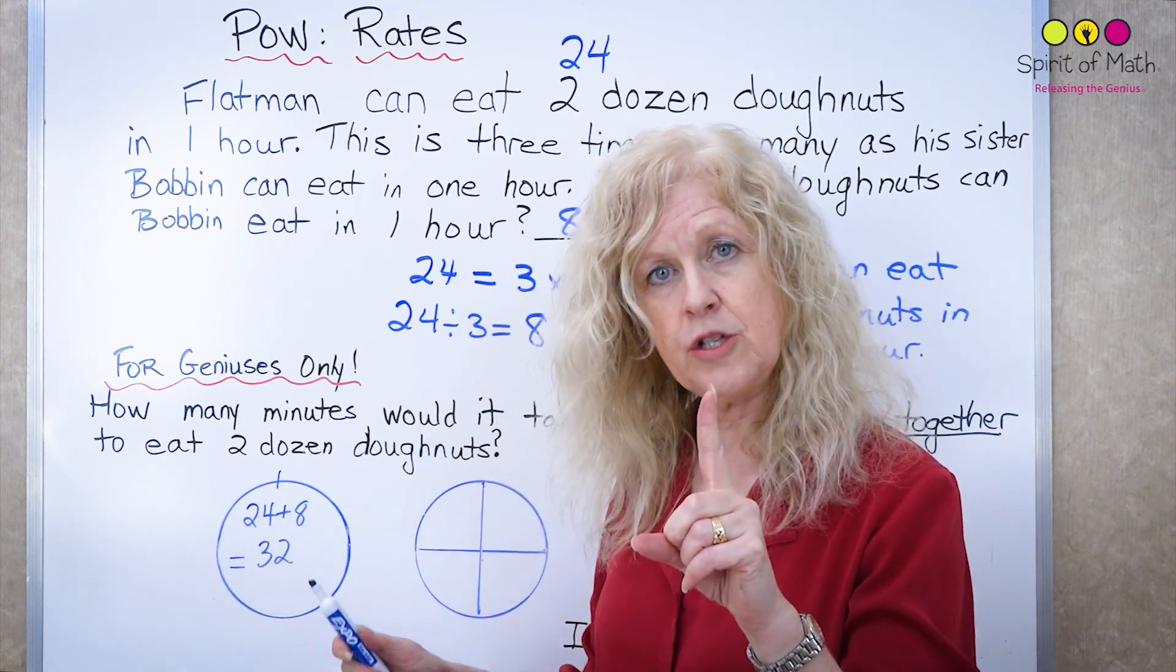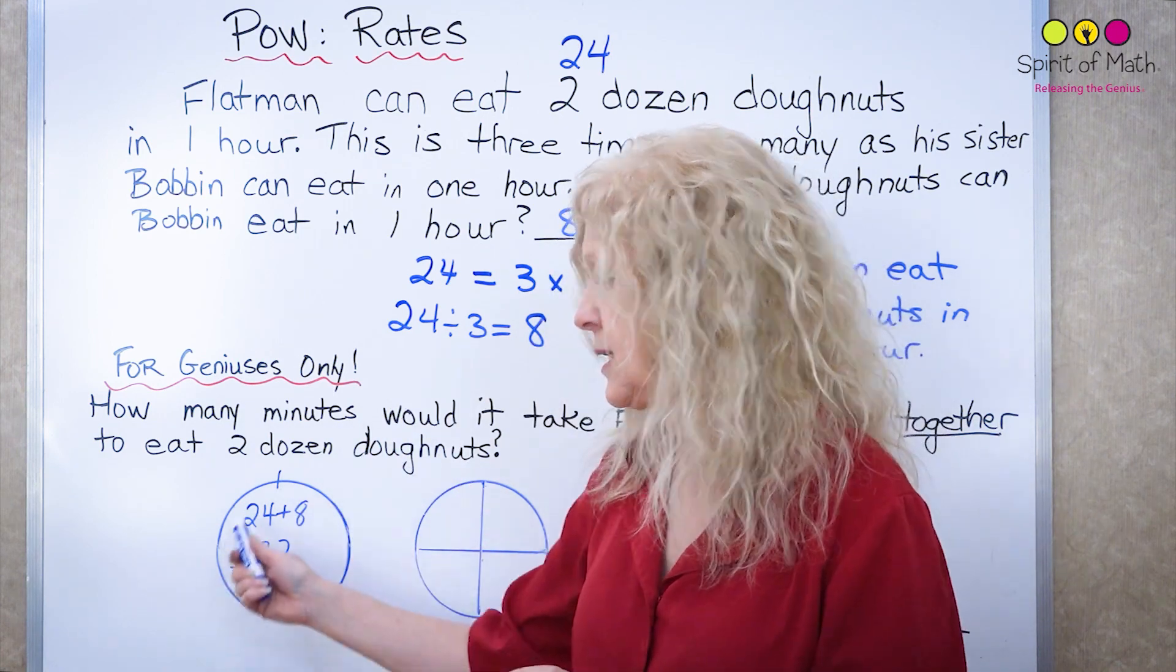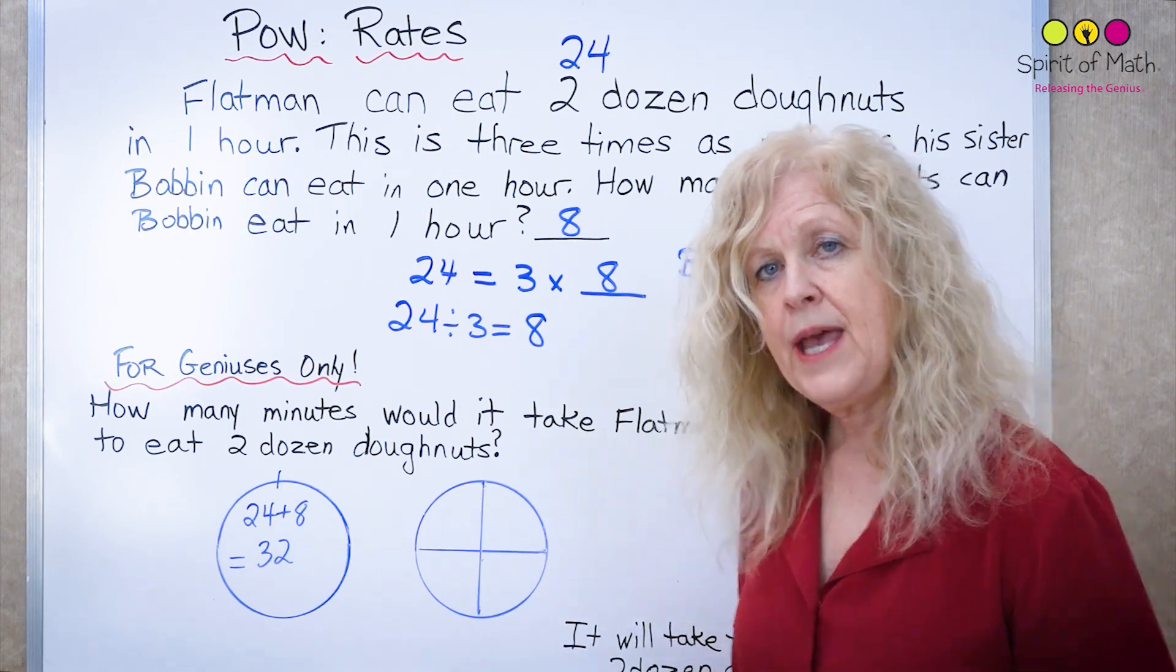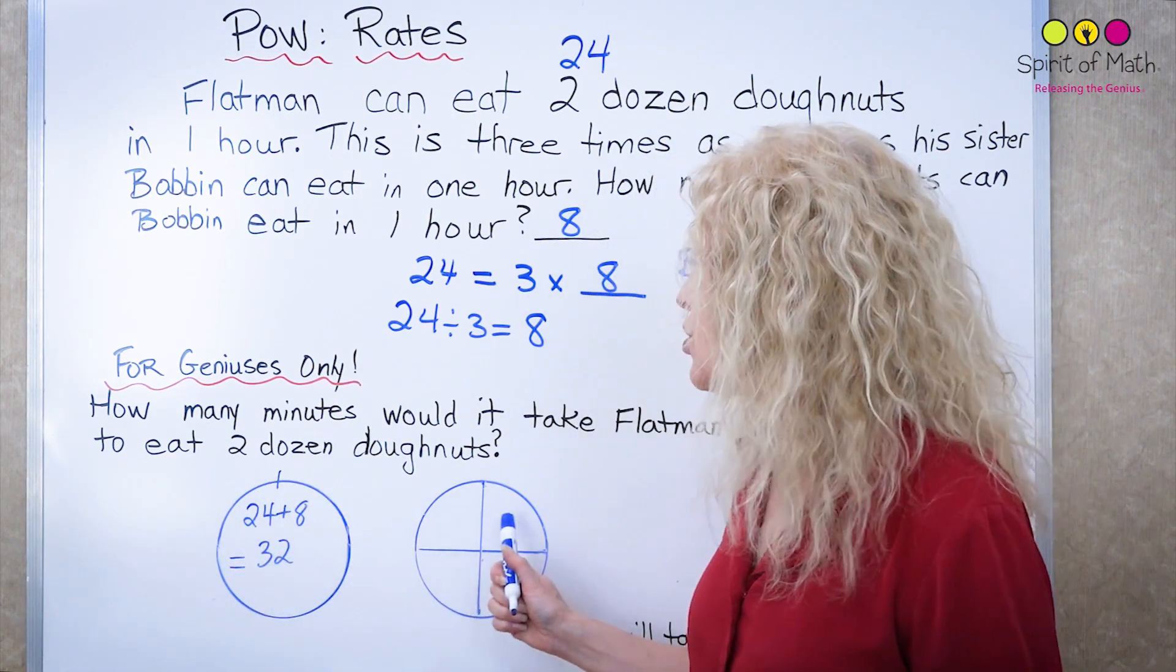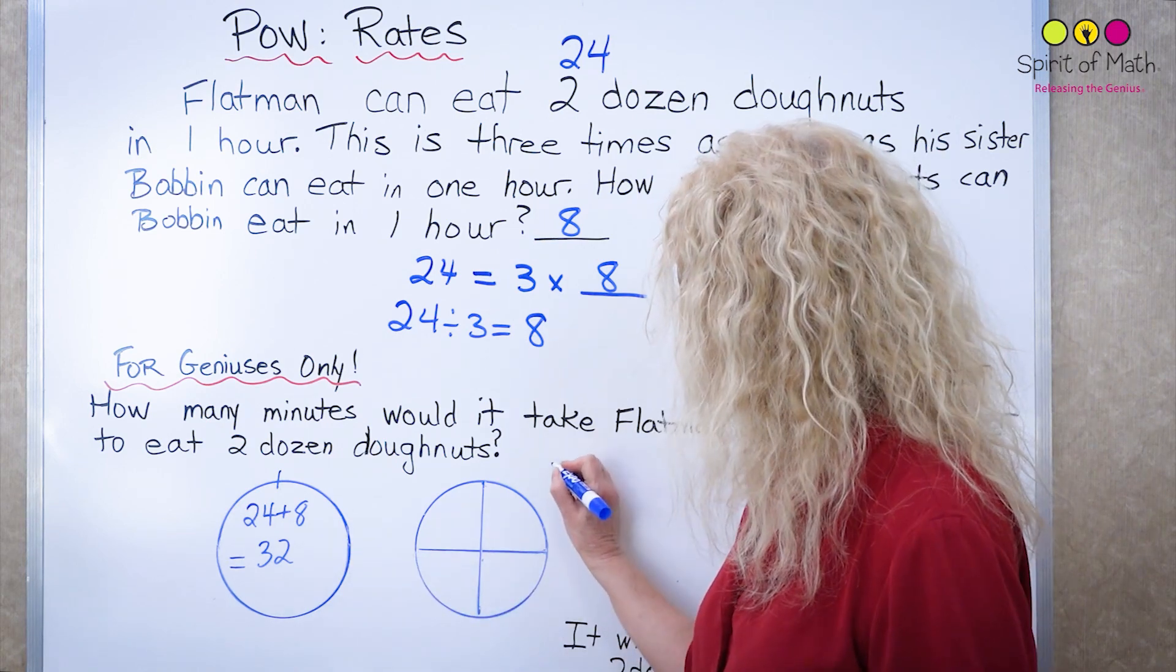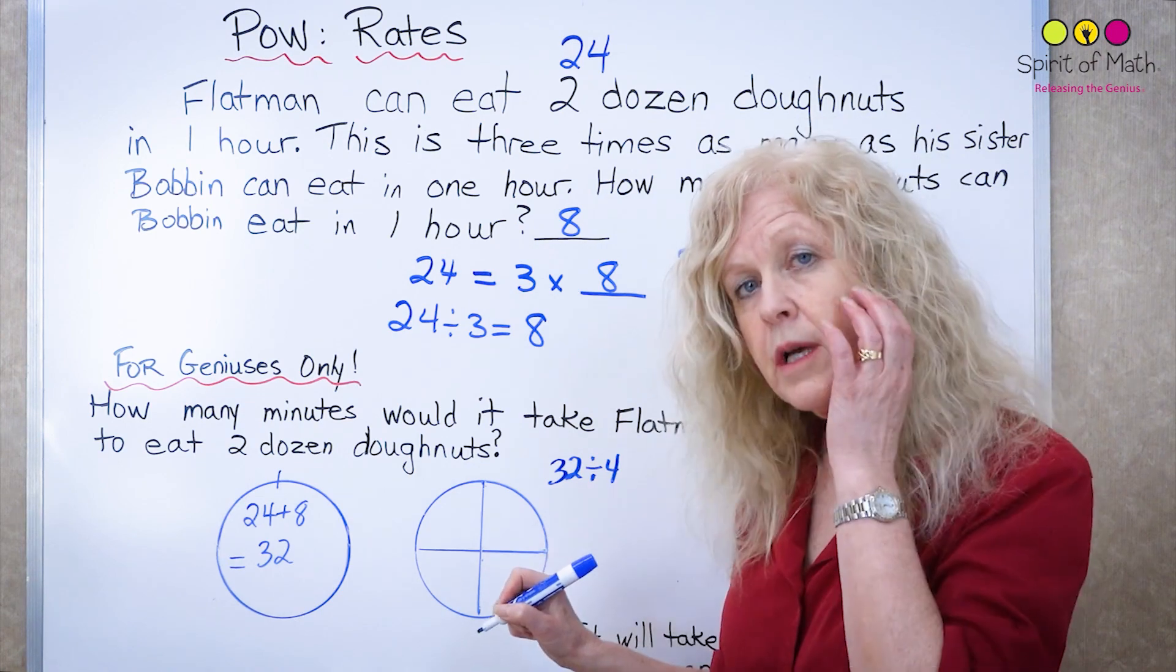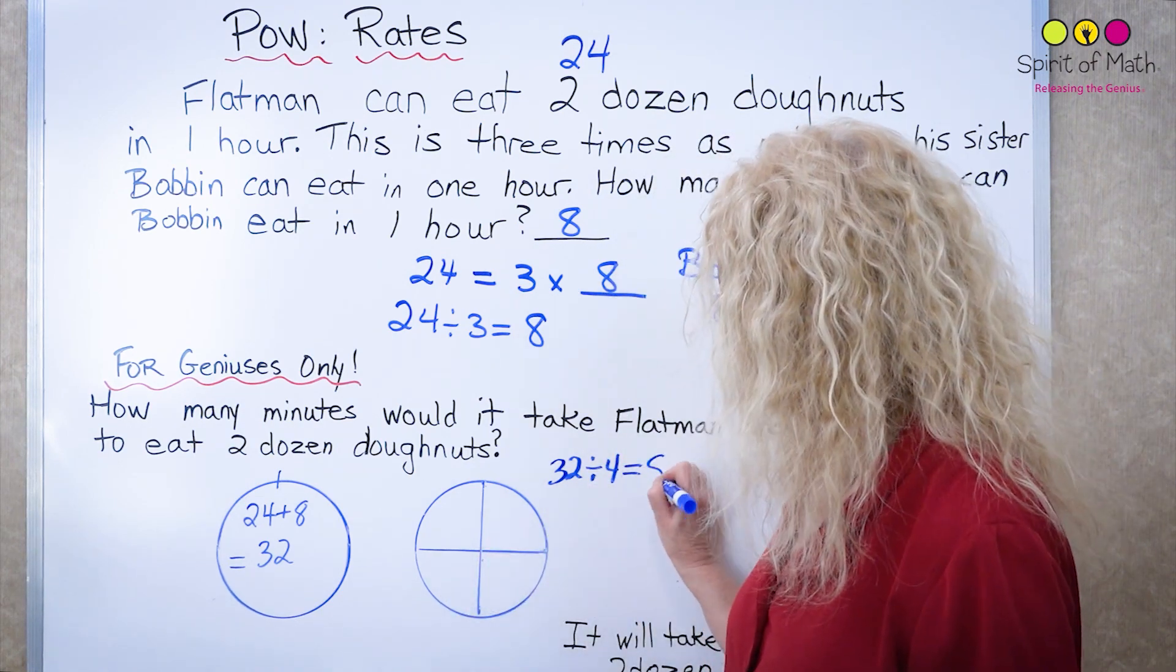Now let's break it down into 15 minute sections because one hour is 60 minutes. So let's divide up that hour into quarters and each quarter if the whole is 32 then each quarter, so we could figure this out, we could say 32 divided by four because or four times something equals 32 and that would equal eight.